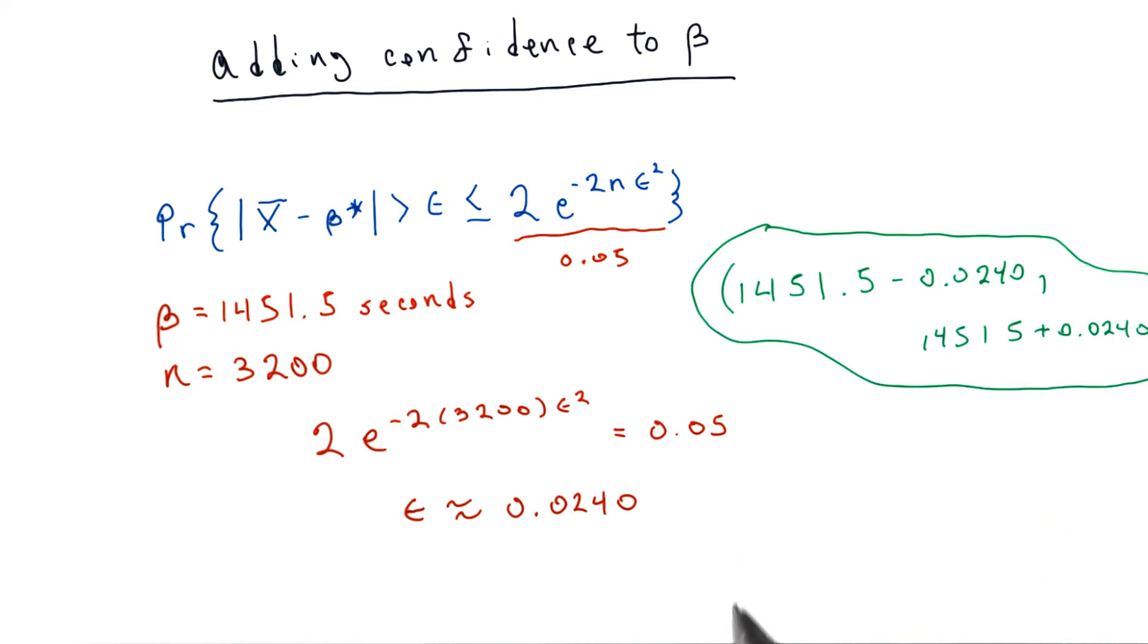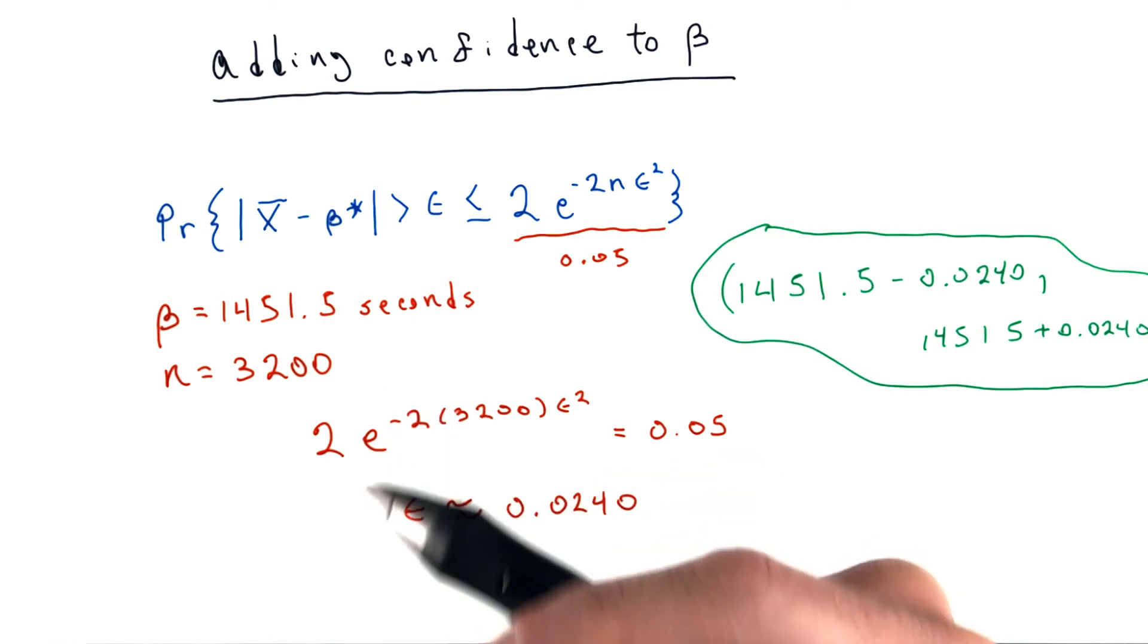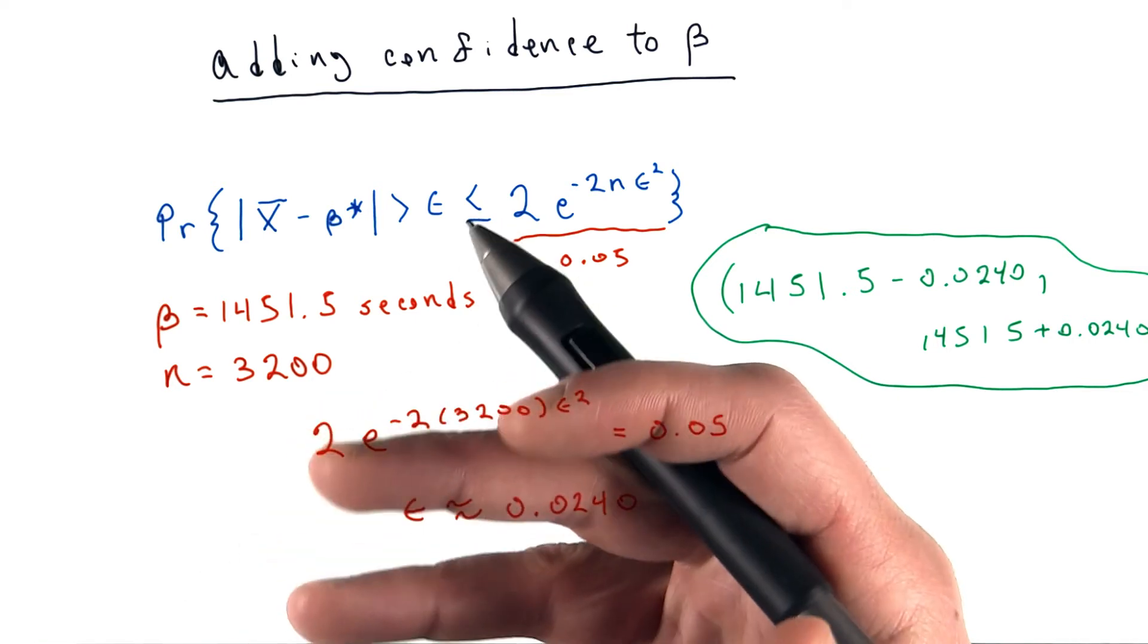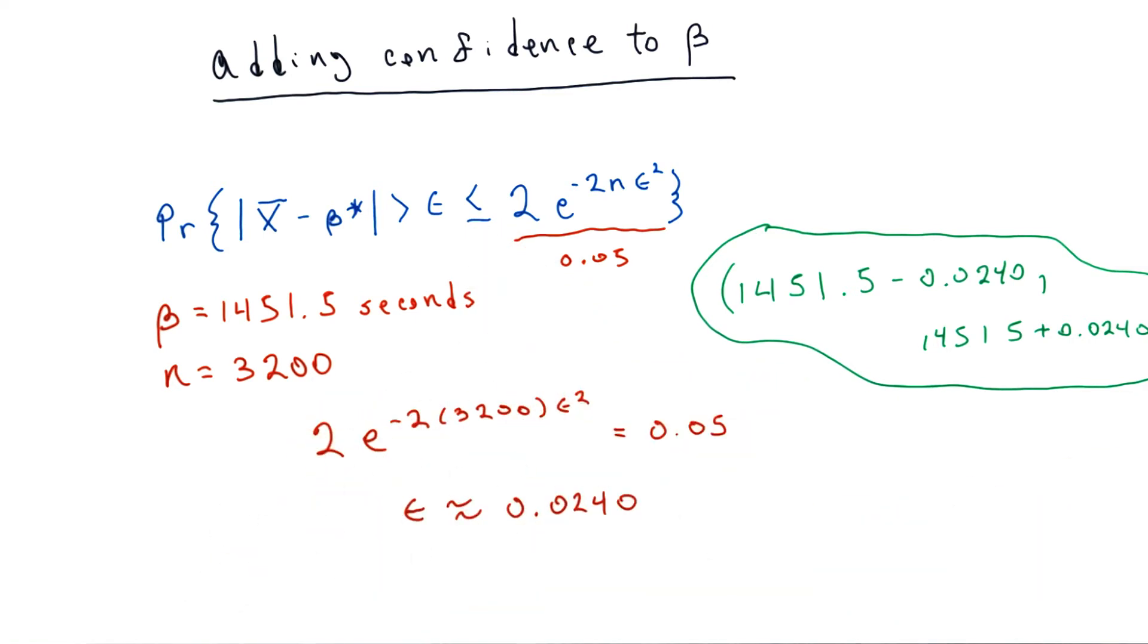If we're going to use this exponential fit to predict when this person tweets next, the best we can say is that it lies somewhere within this interval.